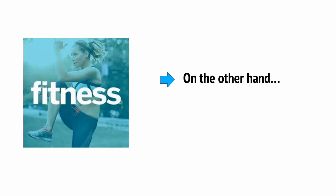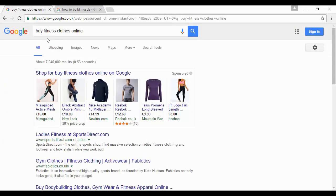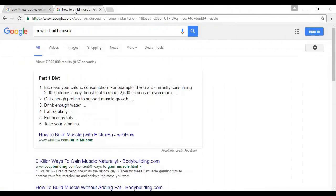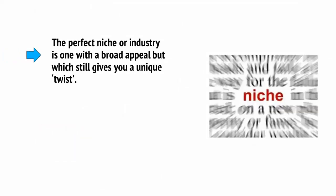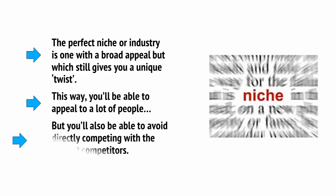On the other hand, a niche like fitness may be considered too broad. 'Buy fitness clothes online' is a hugely popular search term that companies like Sports Direct, Sweaty Betty, and Mountain Warehouse dominate. Even ranking for search terms like 'how to build muscle' is going to be very difficult. The perfect niche or industry is one with a broad appeal, but which still gives you a unique twist. This way, you'll be able to appeal to a lot of people, but you'll also be able to avoid directly competing with the biggest competitors.